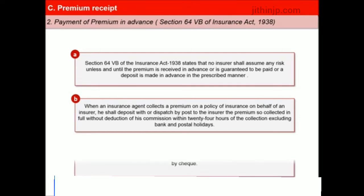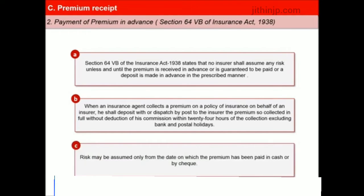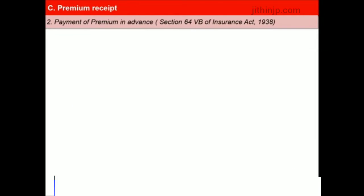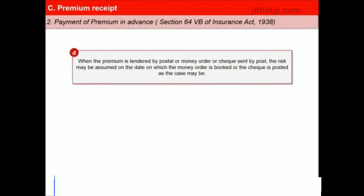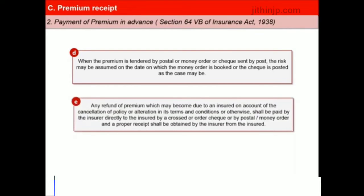The risk may be assumed only from the date on which the premium has been paid in cash or by cheque. When the premium is tendered by postal or money order or cheque sent by post, the risk may be assumed on the date on which the money order is booked or the cheque is posted. Any refund of premium due to the insured on account of cancellation of policy or alteration in its terms shall be paid by the insurer directly to the insured by a crossed order cheque or by postal or money order, and a proper receipt shall be obtained.